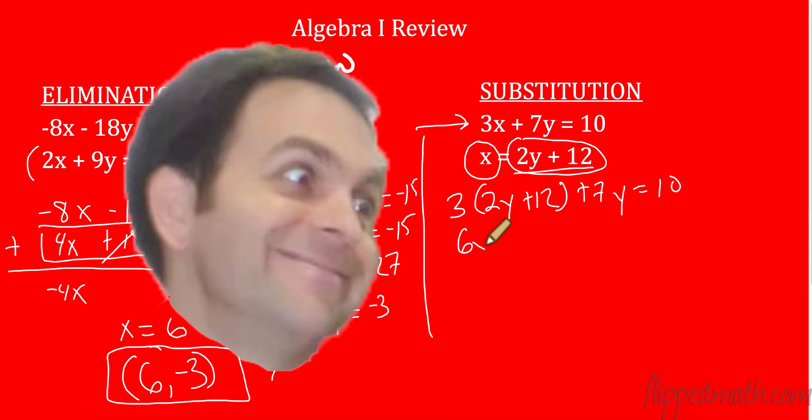So distribute here. That's 6y plus 36 plus 7y equals 10. I can combine like terms. I have 13y plus 36 equals 10. I need to subtract 36 from both sides. So that's negative 26. And I need to divide. So y equals negative 2.